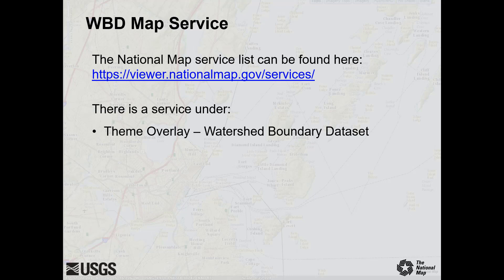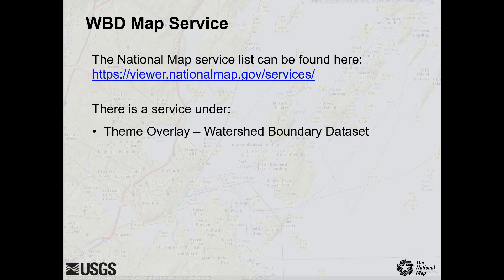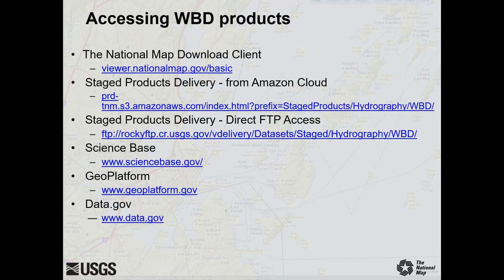The USGS has a list of map services providing data from the National Map; the service list link is shown here. WBD has its own standalone map service within the theme overlays group. The National Map also hosts a standalone NHD map service, which can be used together with the WBD service. Sometimes it is preferable to download the data files — especially if you need to manipulate or analyze the data content.